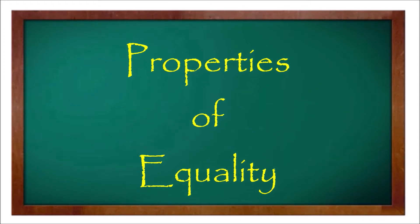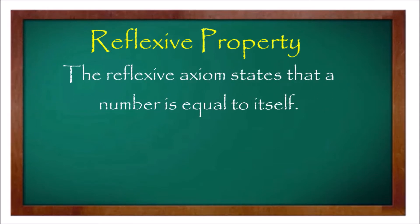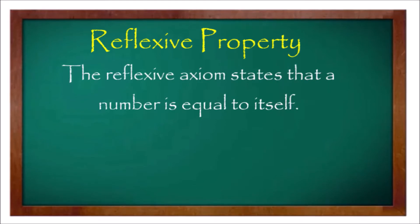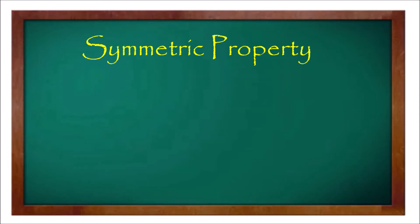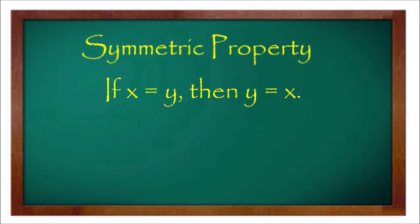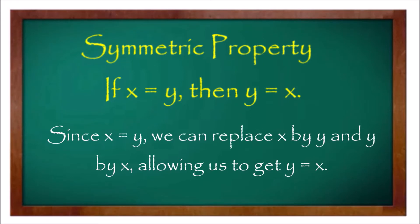The first property of equality is the reflexive property. The reflexive property states that a number is equal to itself — say, x is equal to x. The next property of equality is the symmetric property: if x is equal to y, then y is equal to x. Since x equals y, we can replace x by y and y by x, giving us y is equal to x.